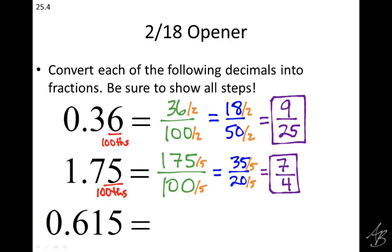Last one. This last digit here, this is not in the hundredths place, is it? What is that in? That's the thousandths place. So when I write my fraction, this time I'm going to have a thousand in the denominator, and what goes in the numerator? 615.